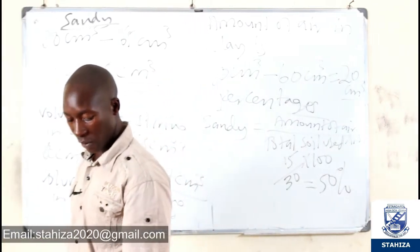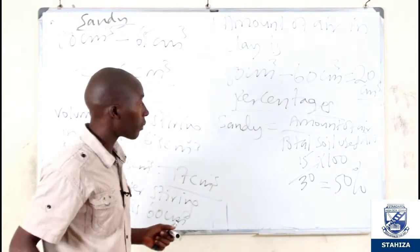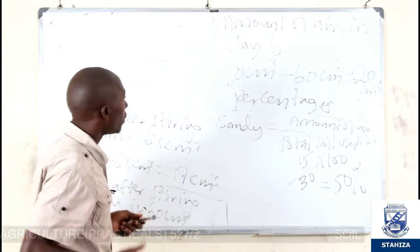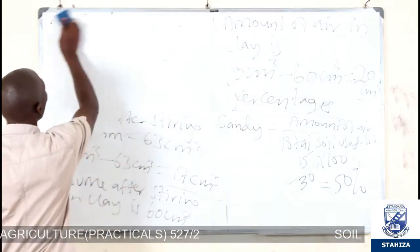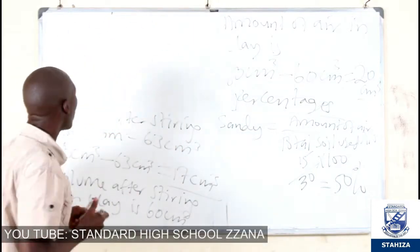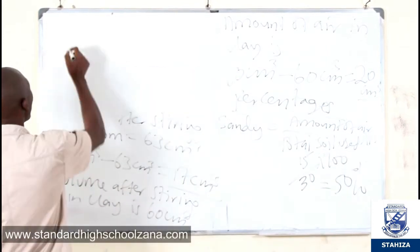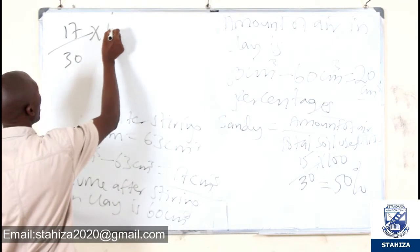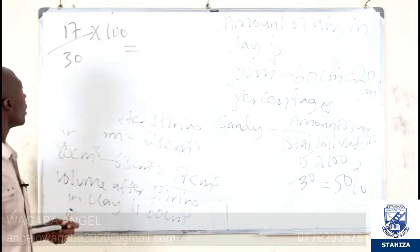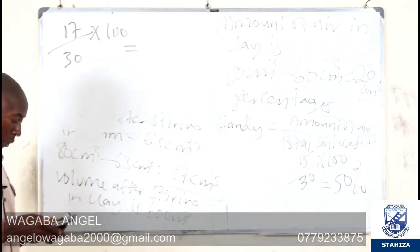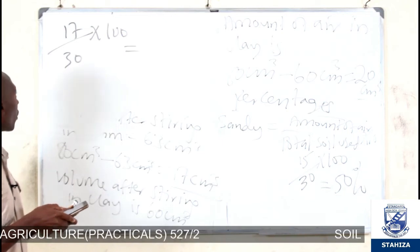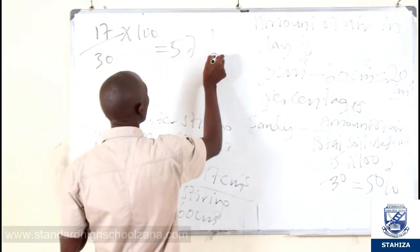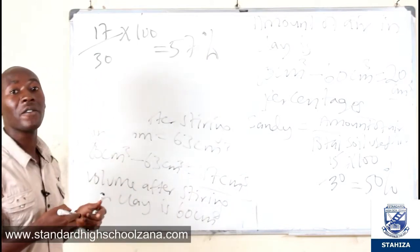The percentage for loam soil: we take the amount of air we got, which was 17, out of the total amount of soil used, which was 30, times 100. The percentage of air in loam is 17 out of 30, which gives us 57 percent. Loam is having 57 percent air.